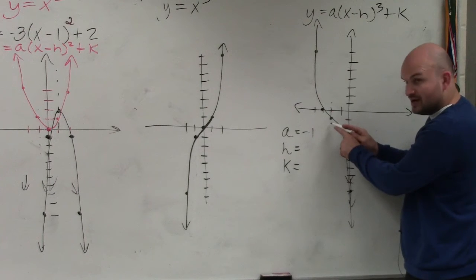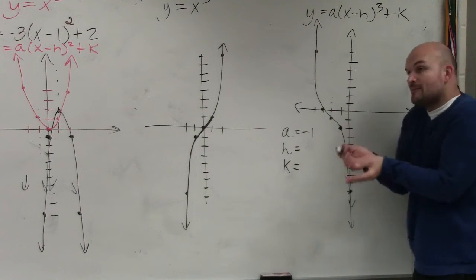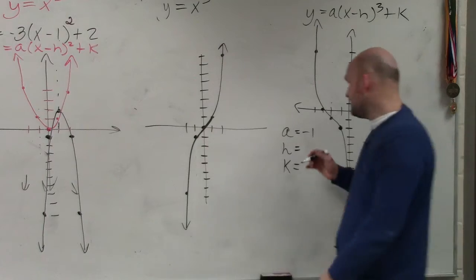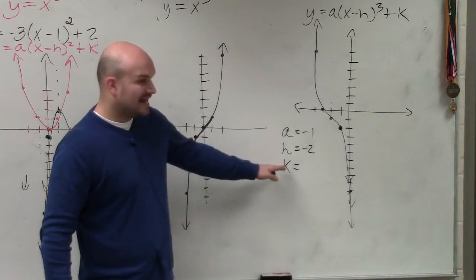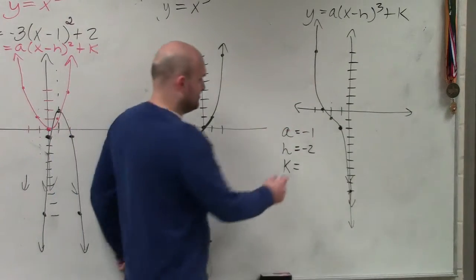That's at the origin. That's my focus point. So you can see that focus point has been shifted left 2 and down 1. So how do I represent shifting to the left 2? Well, that means H is going to be negative 2. And K down 1 is going to be a negative 1.